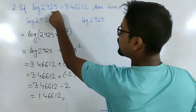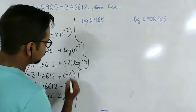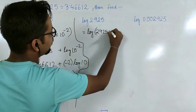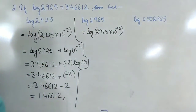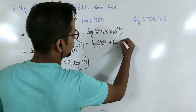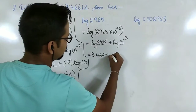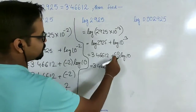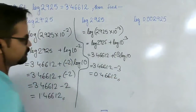For the next value, we similarly convert it into 2925 times 10 to the power minus 3. It becomes log 2925 plus log of 10 to the minus 3, which is 3.46612 plus minus 3 times log 10. That gives 3.46612 minus 3, and the answer is 0.46612.